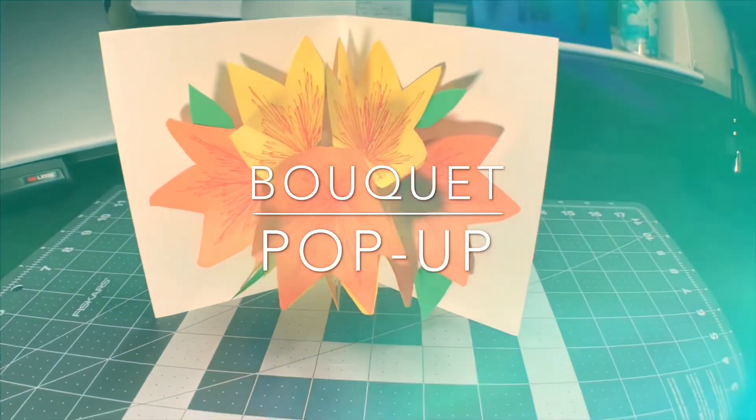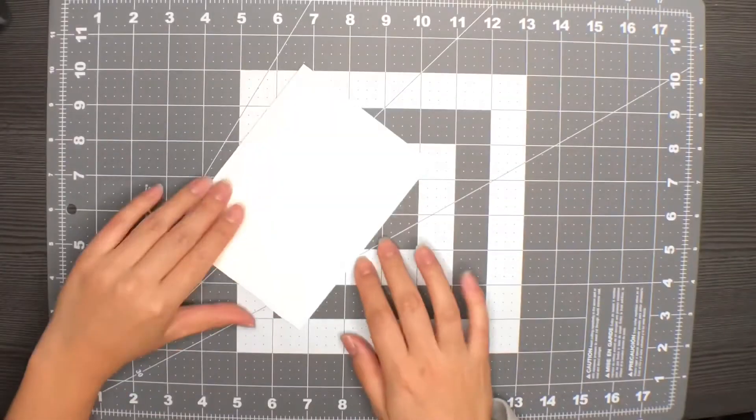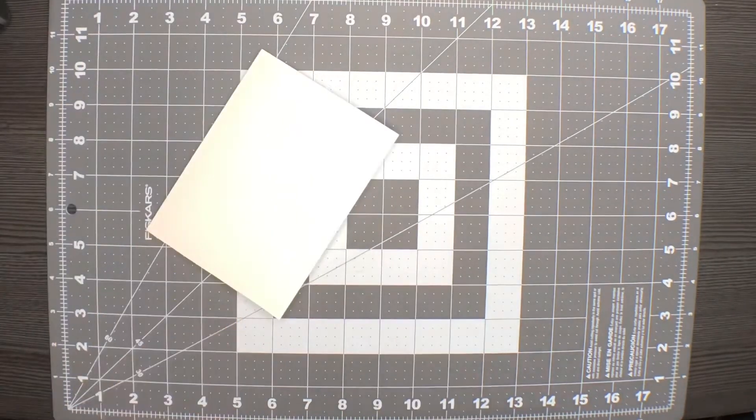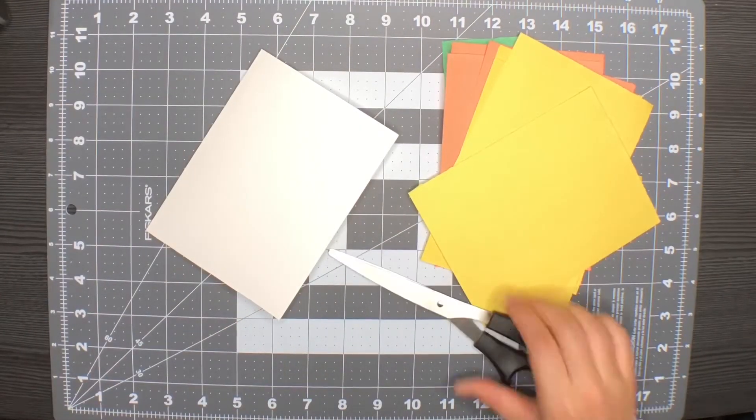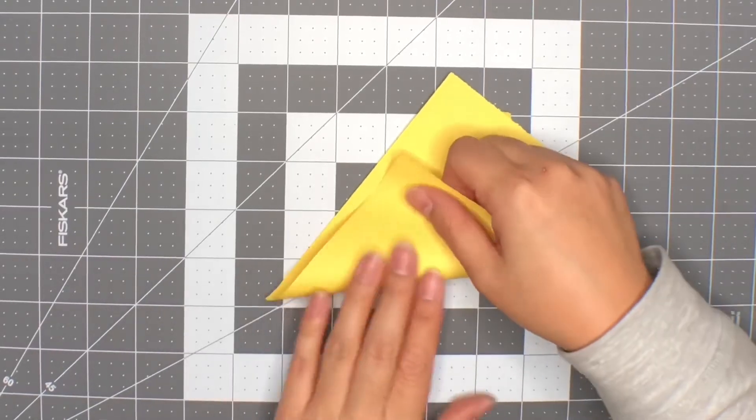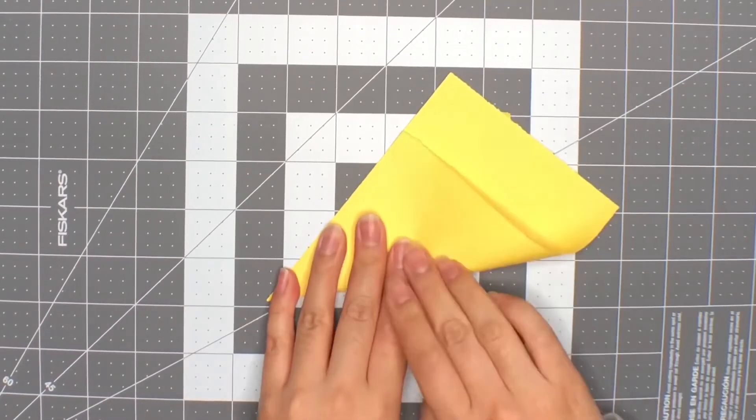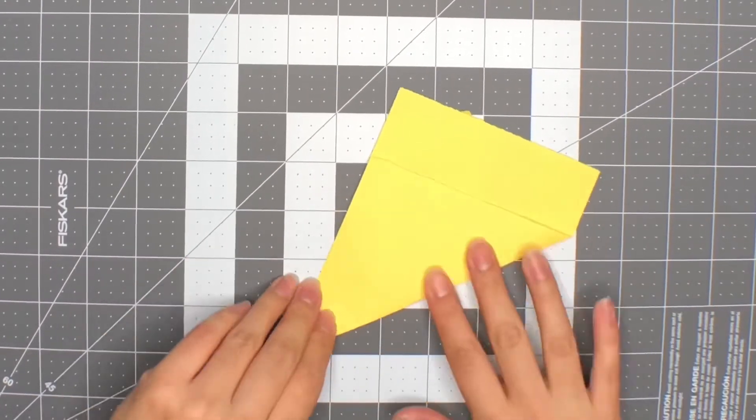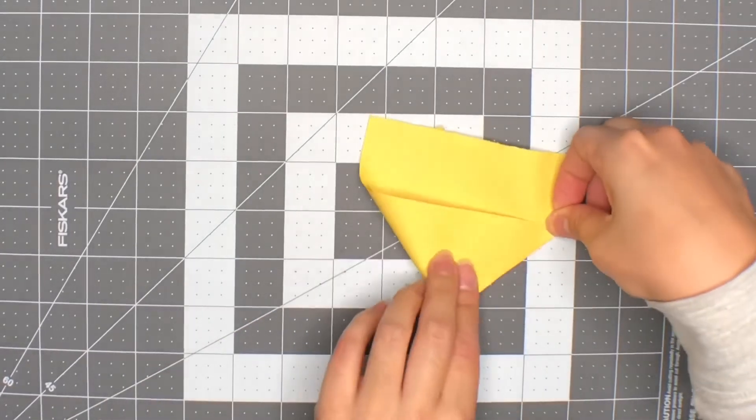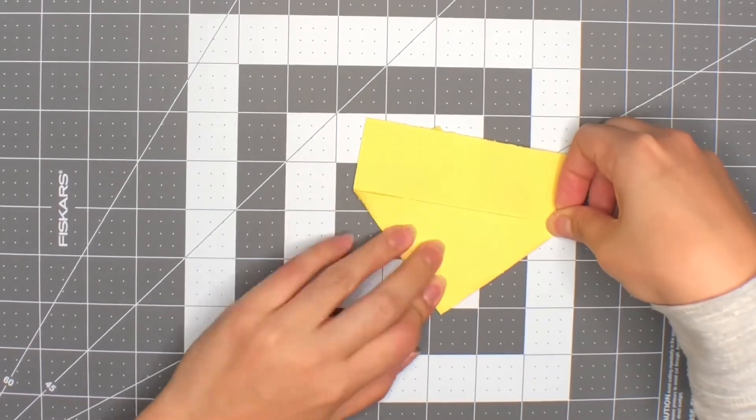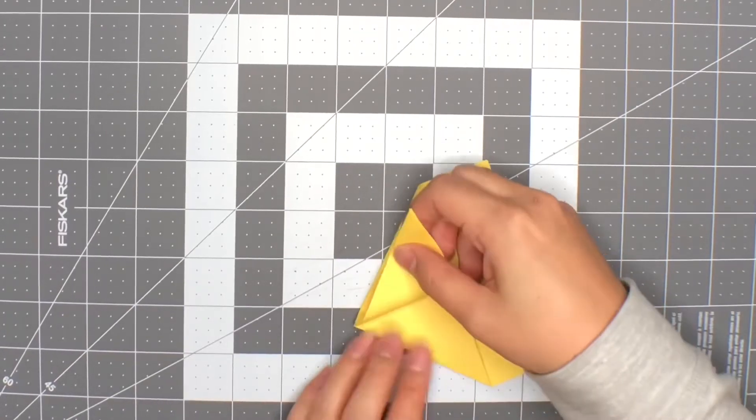Bouquet pop-up. We are starting with an already creased cardstock and 7 pieces of colored paper about the same size as the card or smaller. Now we will fold each colored paper into 8ths, similar as you would when making a snowflake. The flowers we are creating actually end up with 6 petals.